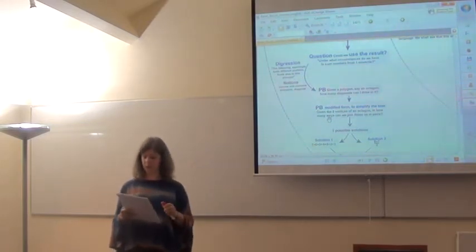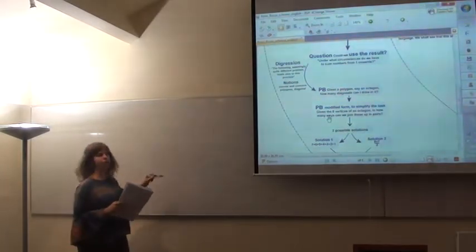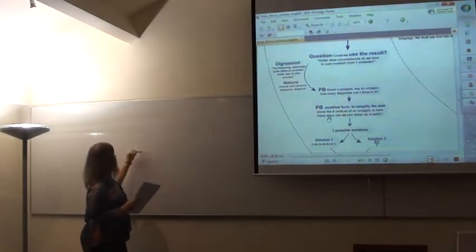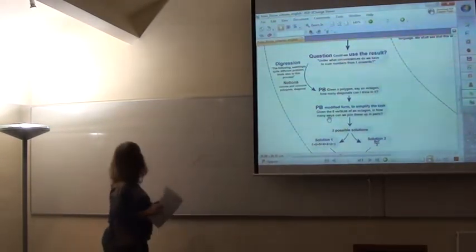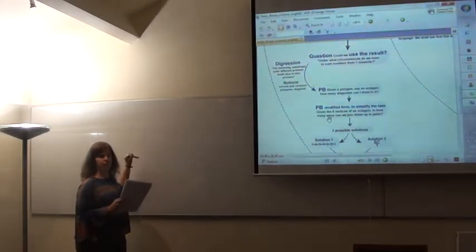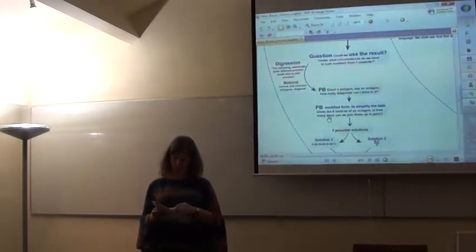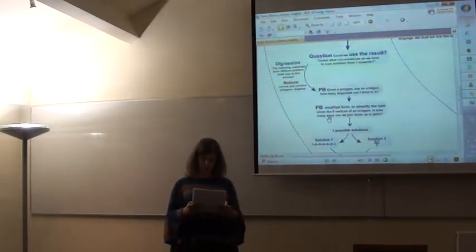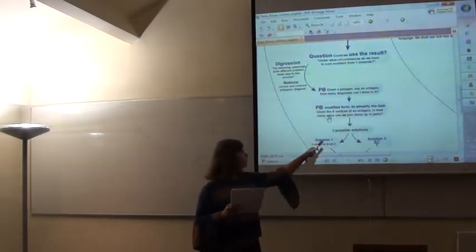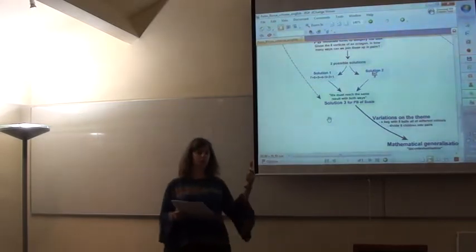To simplify the task, the author proposes to modify the problem slightly. Given the eight vertices of an octagon, how many ways can we join these up in pairs? Two different solutions are here. According to the first one, the first point can be joined to seven other ones, the second can be joined to six, and so on. The second solution: we have eight vertices, and every vertex can be joined to seven other ones. The author says that we must reach the same result in both ways. So this has to be equal to this. So we have a new solution for the original problem.